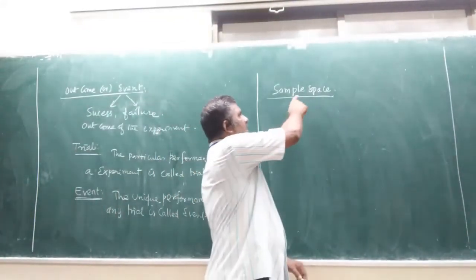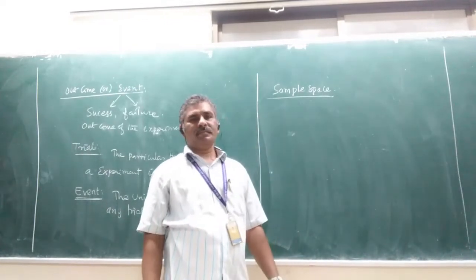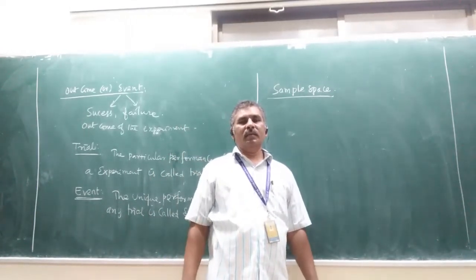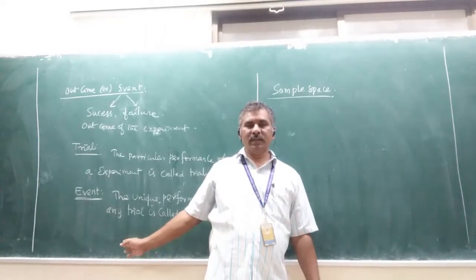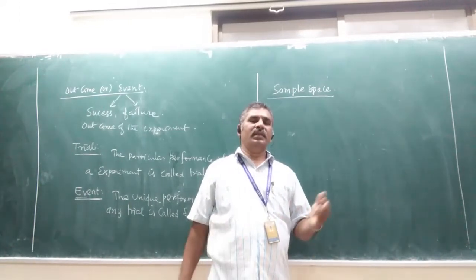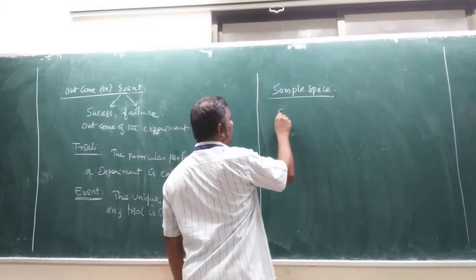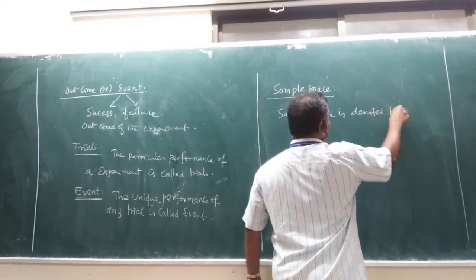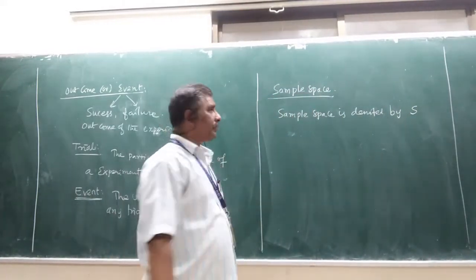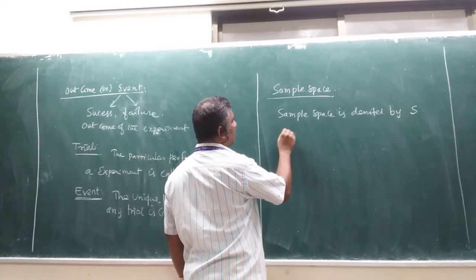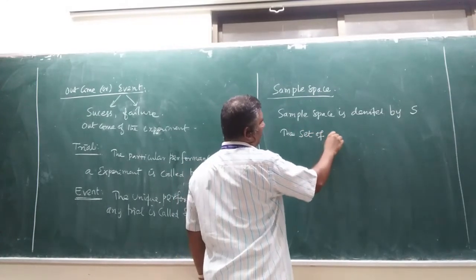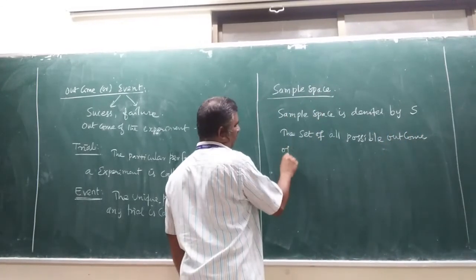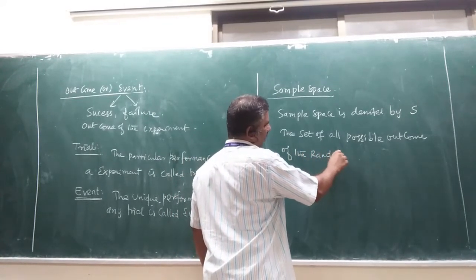Next important term is sample space — it is a very important definition. For the random experiment, we are doing the trial, that is, we are repeating the experiment. For any trial we are getting the outcome, that is called the event. If you write all the events together, that is called the sample space. Sample space is denoted by capital S, and it represents the set of all possible outcomes of the random experiment.